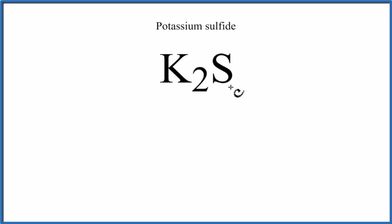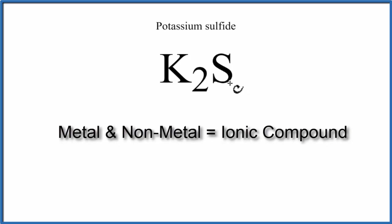Potassium is a metal, and sulfur is a non-metal. When you have a metal and a non-metal, you have an ionic compound.